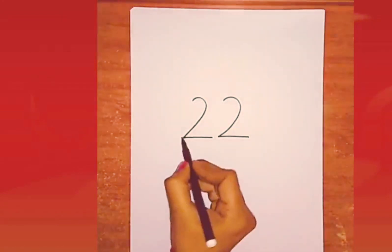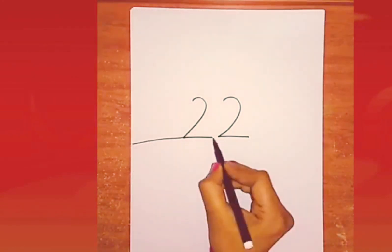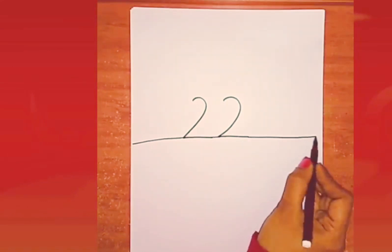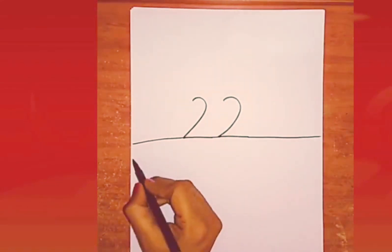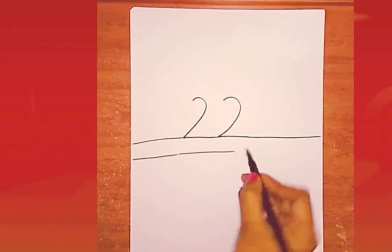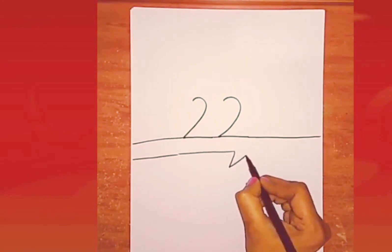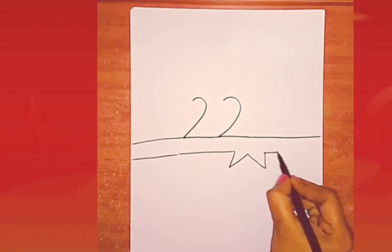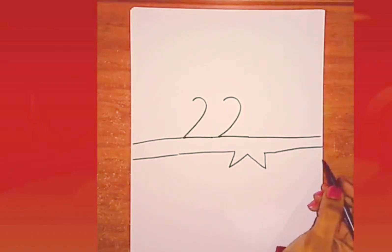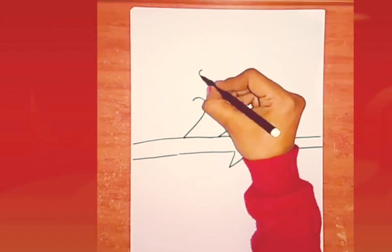After writing 22, join the base of the 2. This becomes the branch. I draw one more parallel line. Now draw a W shape and extend the line. This becomes the smaller branches. Now I draw a small flower.